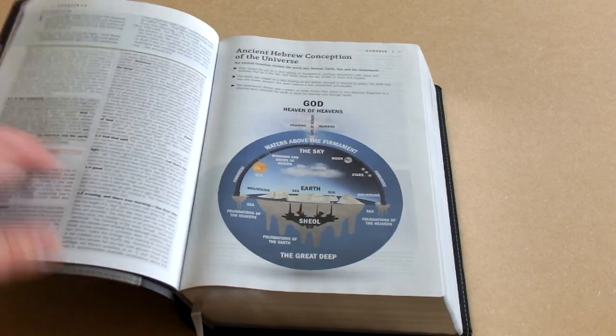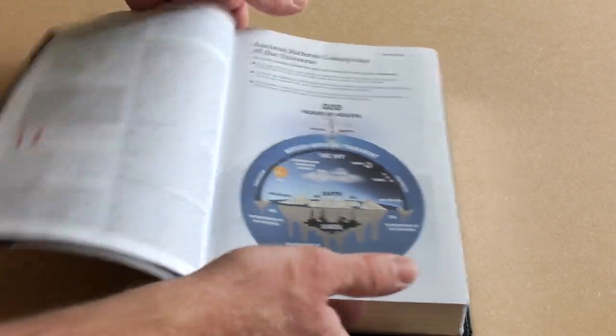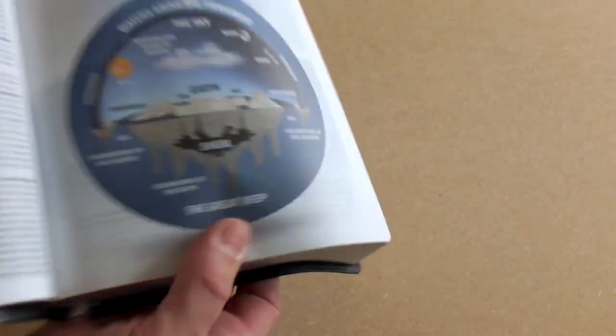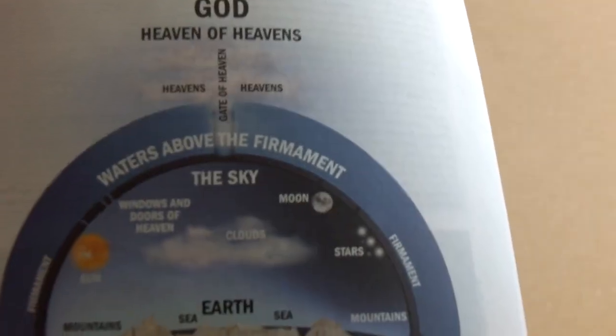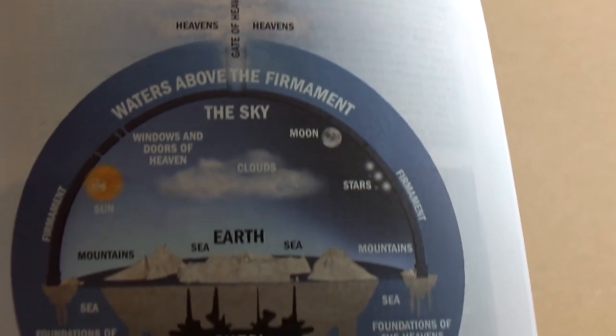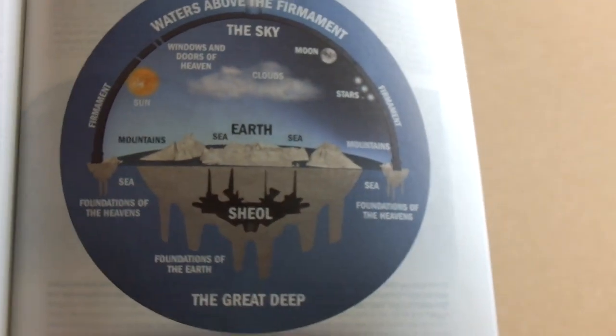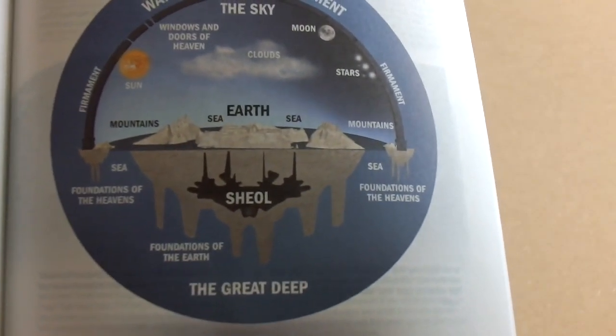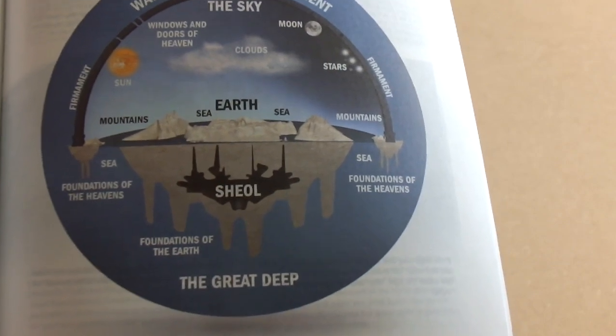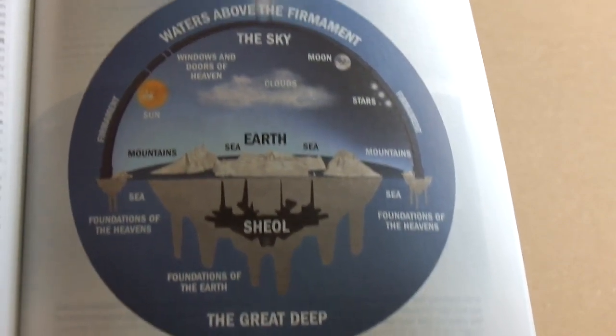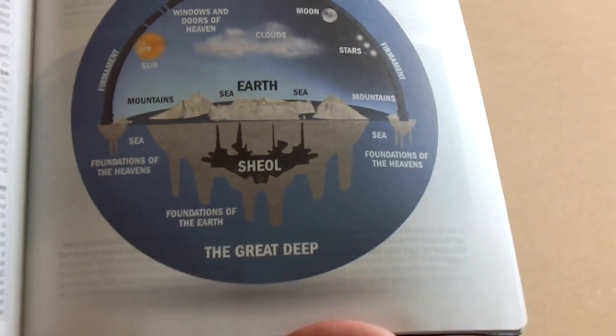It's pretty much usual fare that you get in most study Bibles. You've got introduction to the Pentateuch, Genesis and things like that. And then you've got things like this. This is the start of Genesis and this is really cool. I really like that. It says there the ancient Hebrew conception of the universe. You can see there, these are the sorts of graphics you get. Very visual, very handy. I've never seen anything quite like that in any study Bible that I've owned and I quite like that.